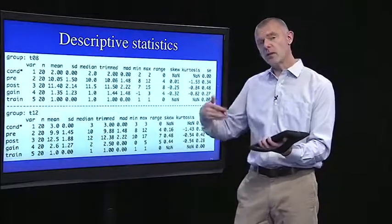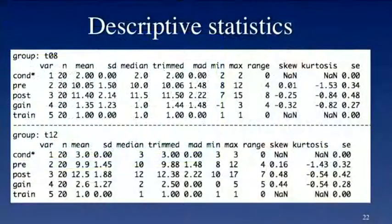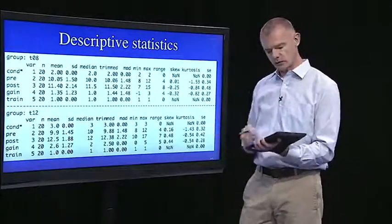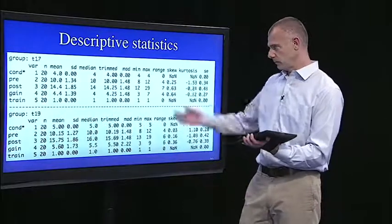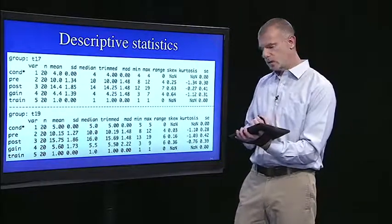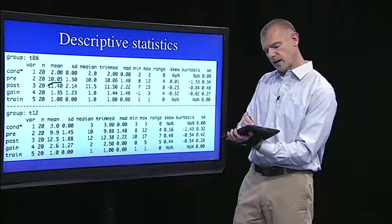But remember, the number of sessions was also a between groups manipulation. So the describe by function will list out descriptives for the control group, now descriptives for what I call the T08 group, that's the eight sessions, T12, that's 12 sessions, 17, 19. And what you can see is the most important thing to look at is the gain score.